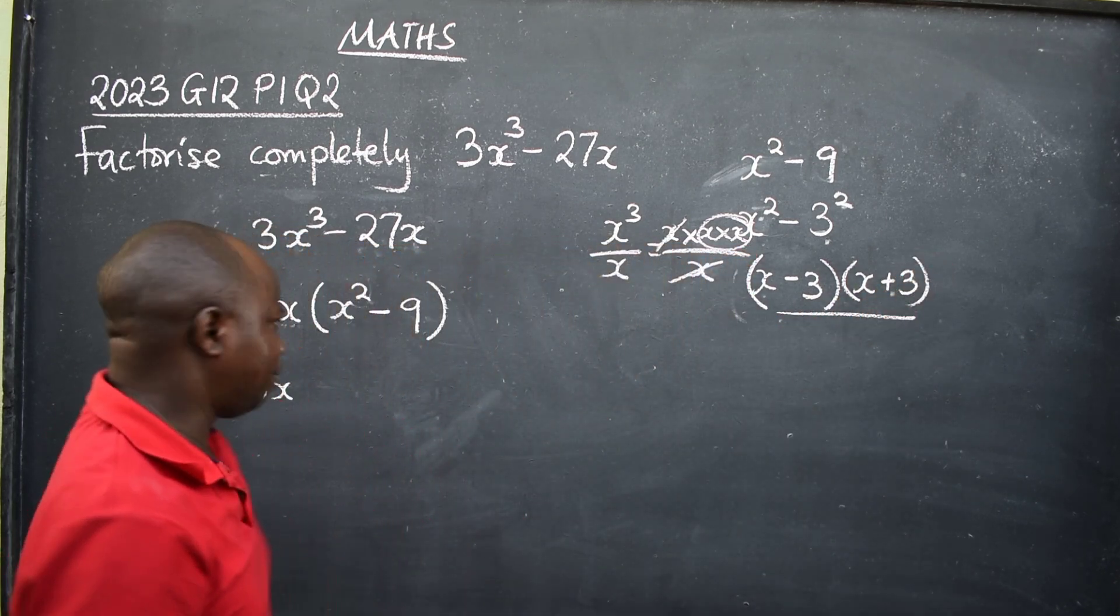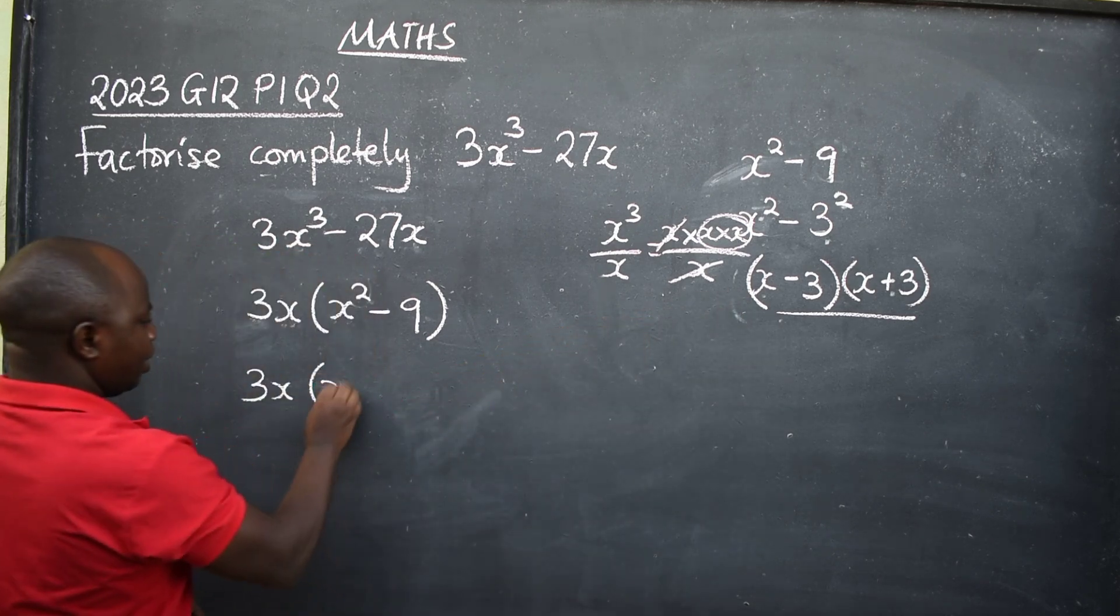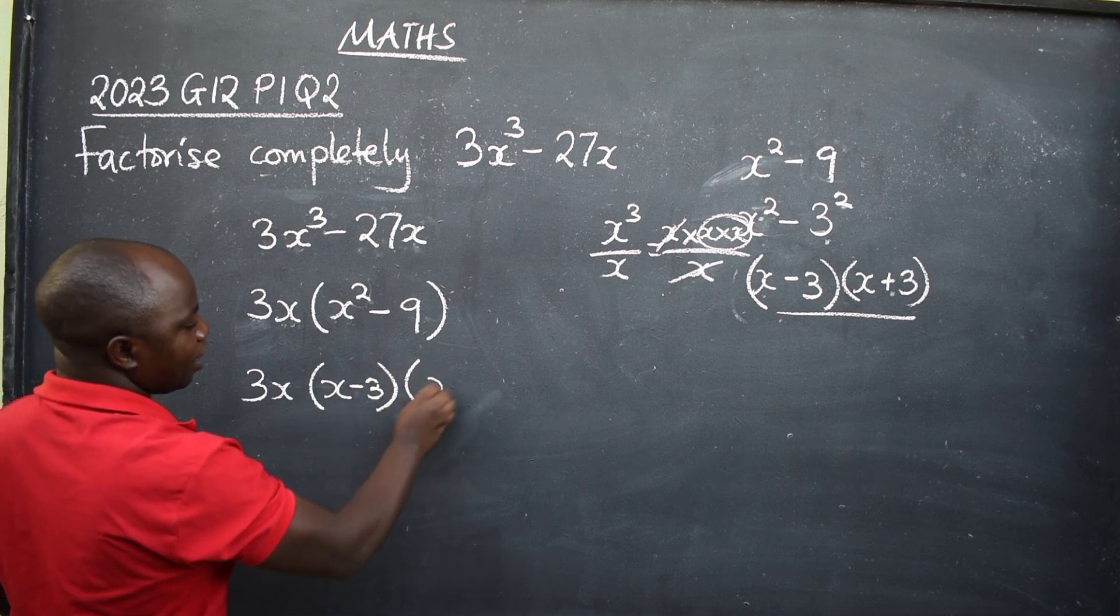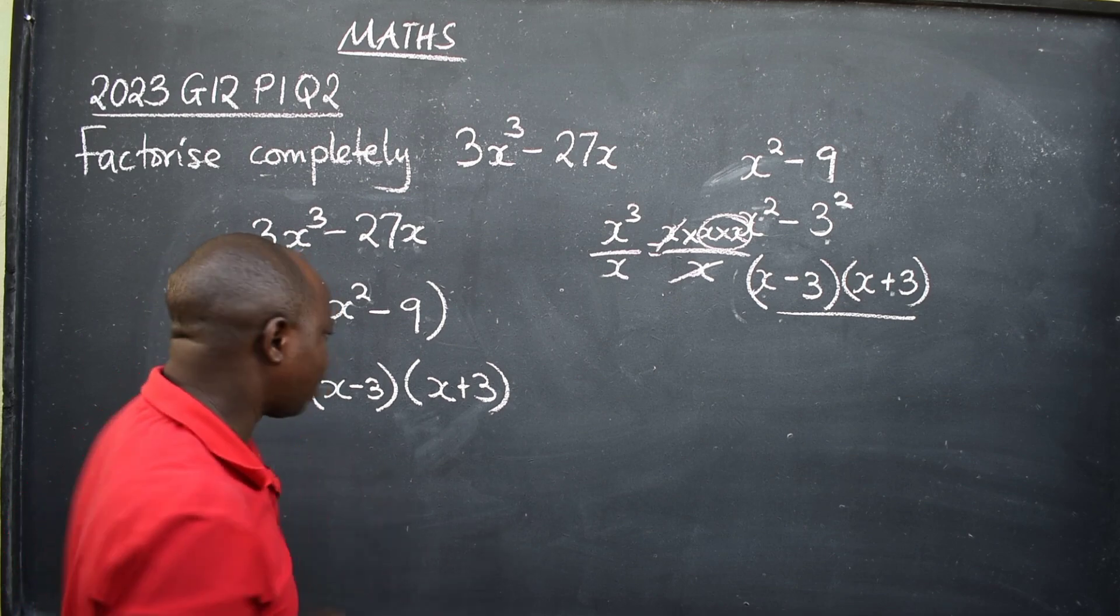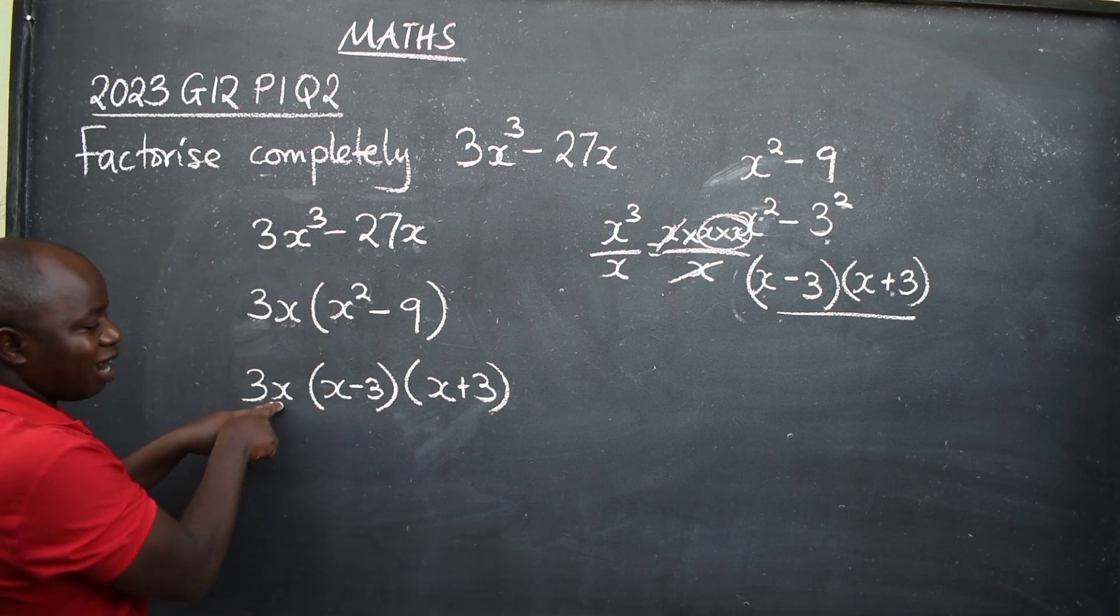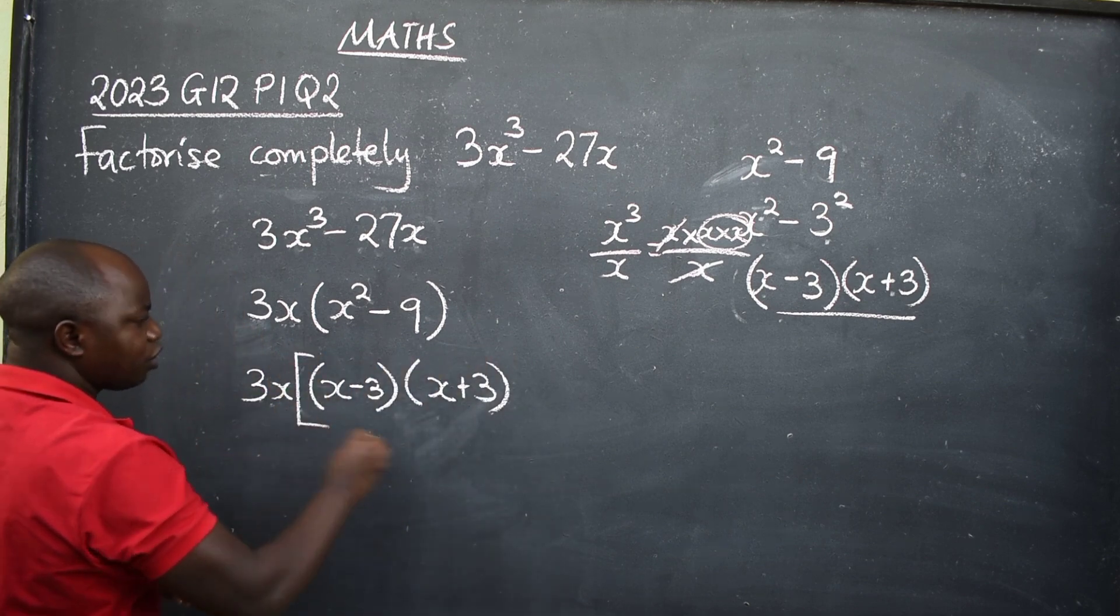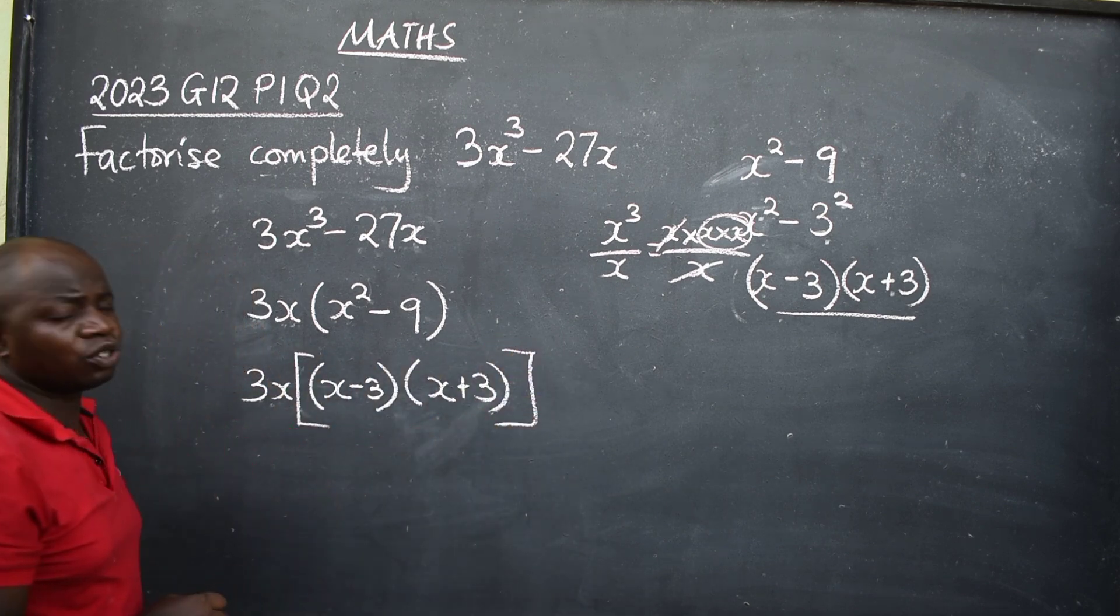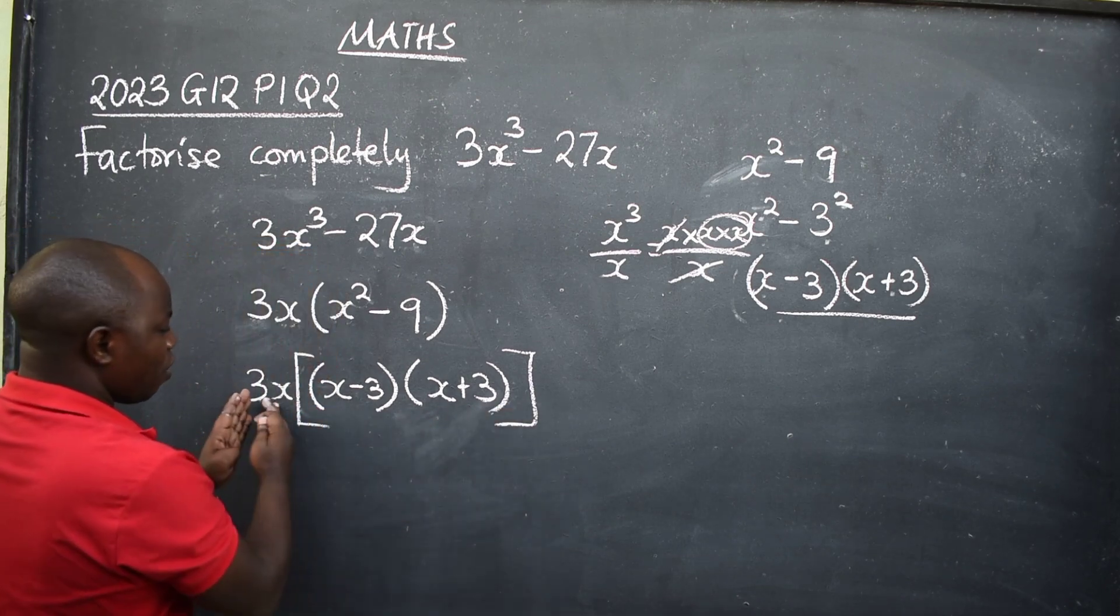When you are replacing, you'll be able to write x minus 3, then the other one x plus 3. Now take note: you have this 3x outside which is affecting both. It means you introduce square brackets like this. This is the correct way of writing.